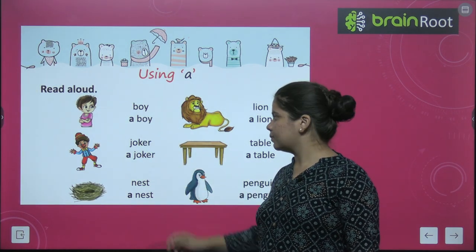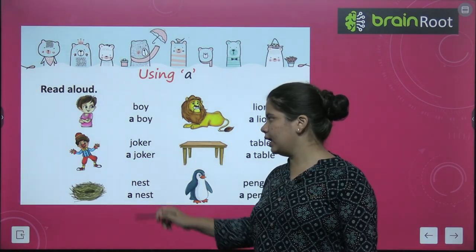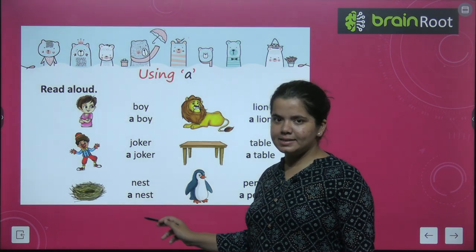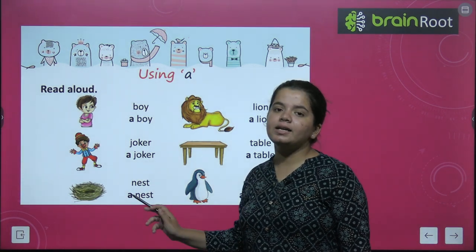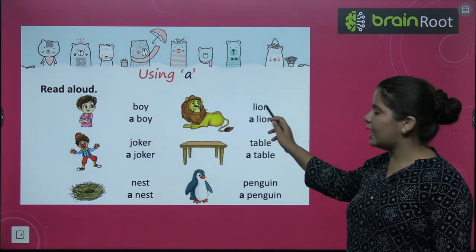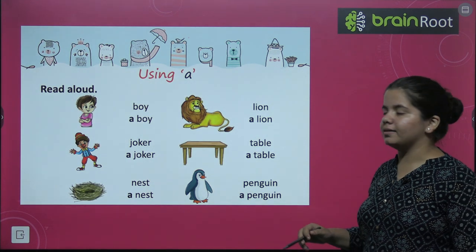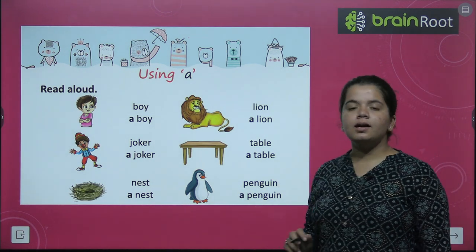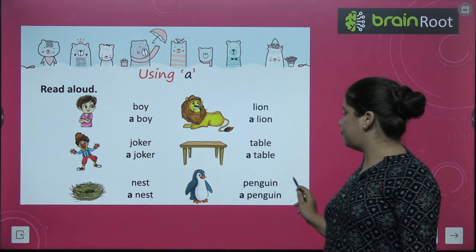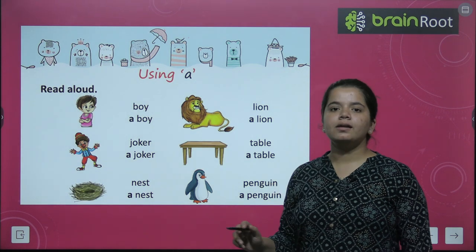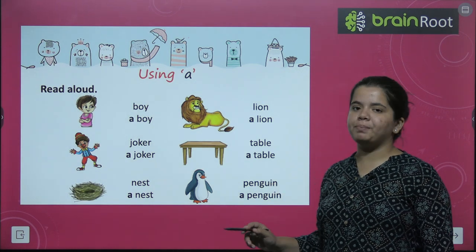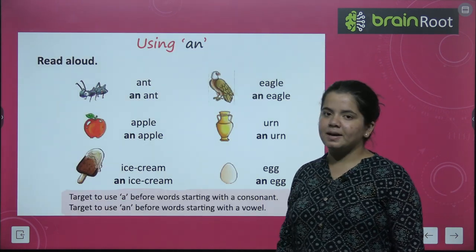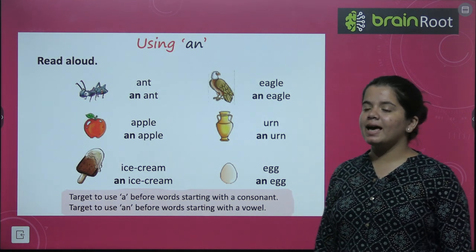A boy, a joker, a nest, a lion, a table, a penguin. Now we have examples using An.